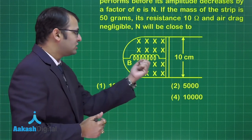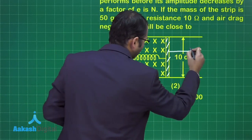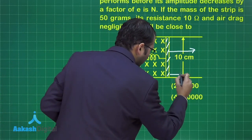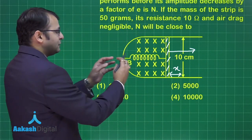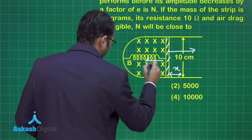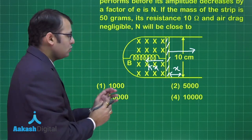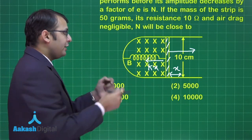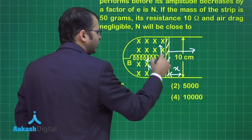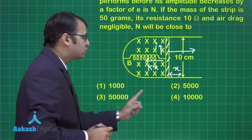Looking at the structure: when the rod is pulled along one direction by distance x, the spring elongates and tries to pull back with force kx. Pulling the rod also results in a change of flux, which generates an induced EMF, which in turn produces an induced current.